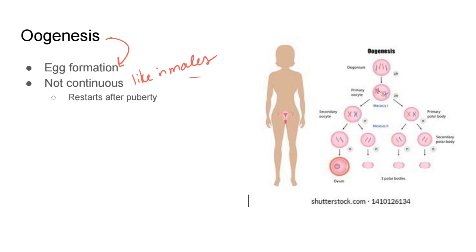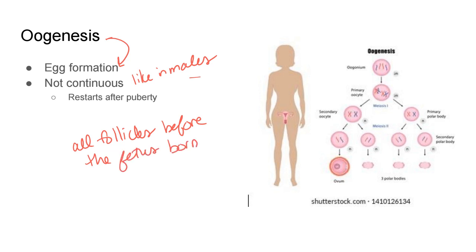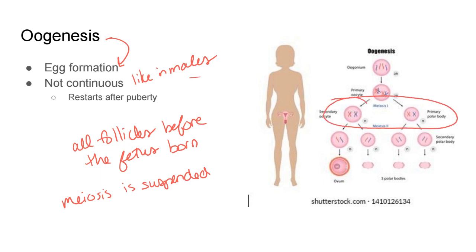In females, all the follicles are actually made before the female is even born — they are made before the fetus is born. The follicle contains an egg cell or an oocyte. So all the follicles are made before the fetus is born, but meiosis — the formation of those gametes — is suspended partway through that first division. The follicles are created, but they're not fully developed into functioning eggs yet. After puberty, meiosis will restart and the female begins releasing these functional egg cells.